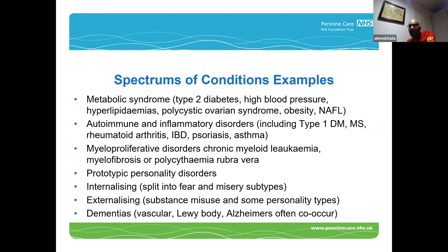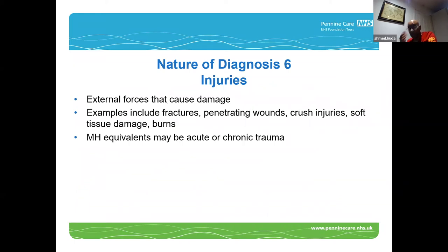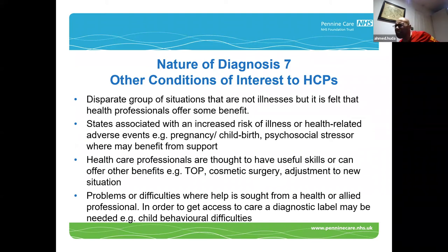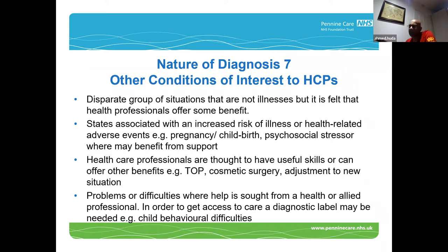Some people group internalizing conditions such as fear and misery — fear covering things like phobias, panic, and misery covering symptoms like depression, generalized anxiety, worry disorder — and then externalizing conditions, substance use, and some putative personality types. Another type you might classify are injuries — breaking bones or being stabbed — but psychologically you might have things like traumatic events or chronic trauma. And then there are a variety of conditions of interest to health or social care professionals, such as termination of pregnancy, plastic surgery, and pregnancy itself, where doctors get involved because they have useful skills or because antenatal care improves outcomes.